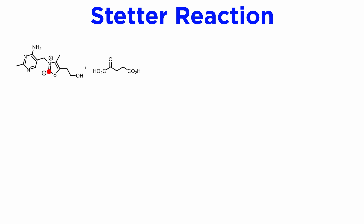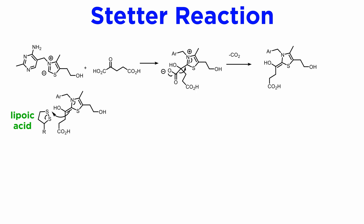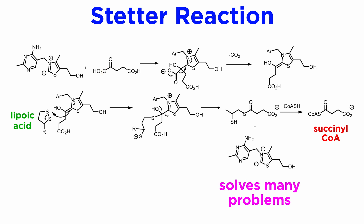Here's how it works. The thiazolium zwitterion attacks the very reactive ketone, which forms another zwitterion, rapidly losing CO2 and forming an umpolung adduct. The acyl carbon, as we have seen, is now nucleophilic and attacks the sulfur atom of a disulfide — coenzyme lipoic acid. Then the thiamine is regenerated, and the thiol of coenzyme A exchanges with the thiol of lipoic acid, yielding succinyl coenzyme A, a form of succinic acid ready for more catabolism. This is how nature solved the problem of removing a carbon from oxoglutarate, and thiamine is very useful in solving a host of natural umpolung problems.